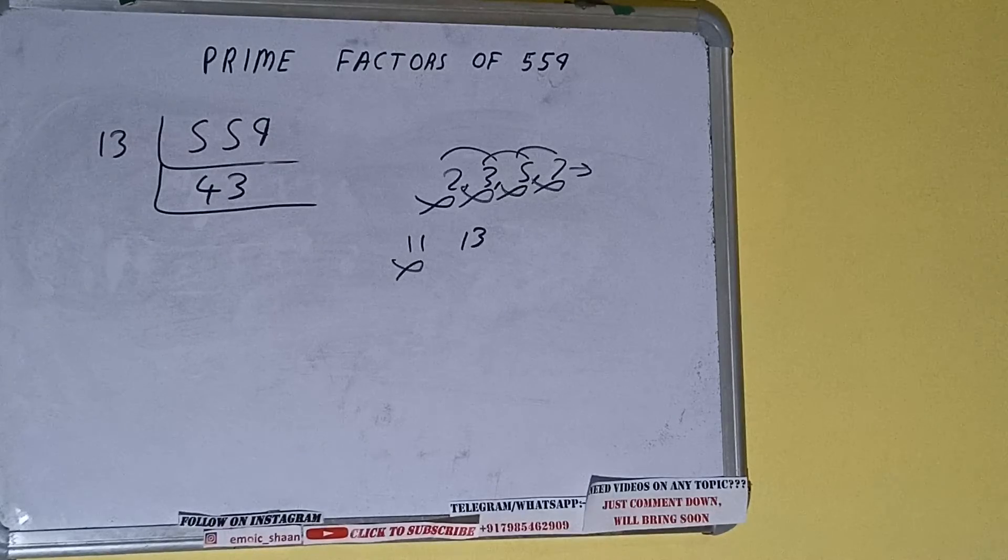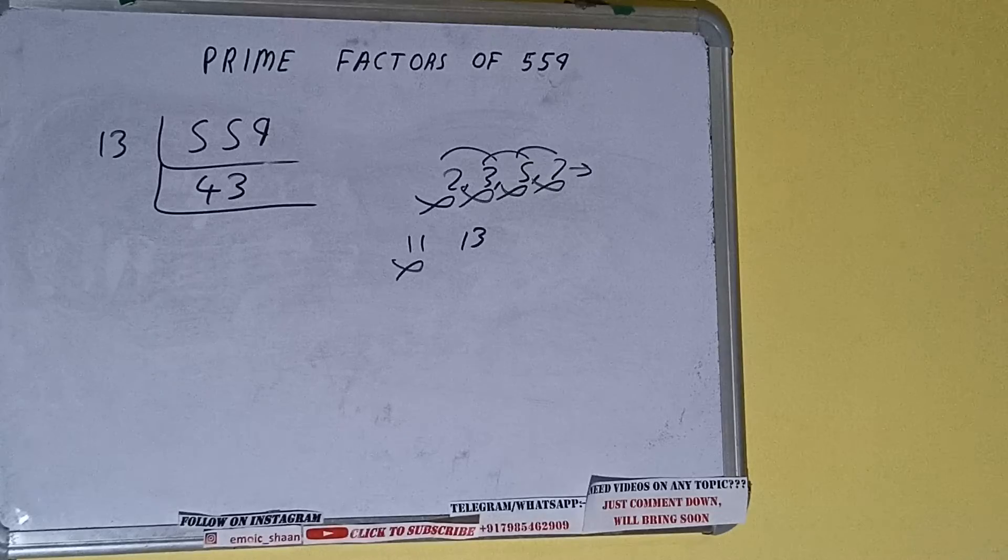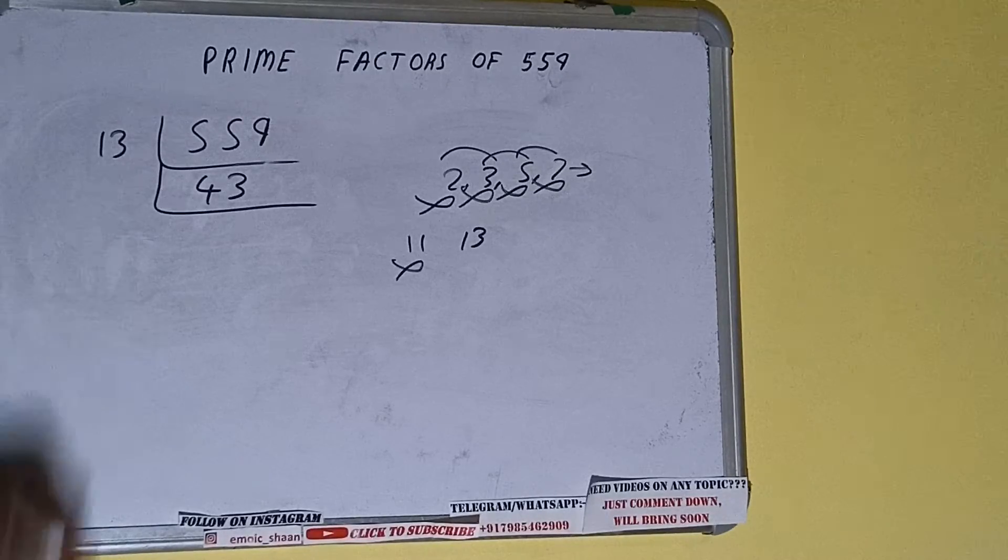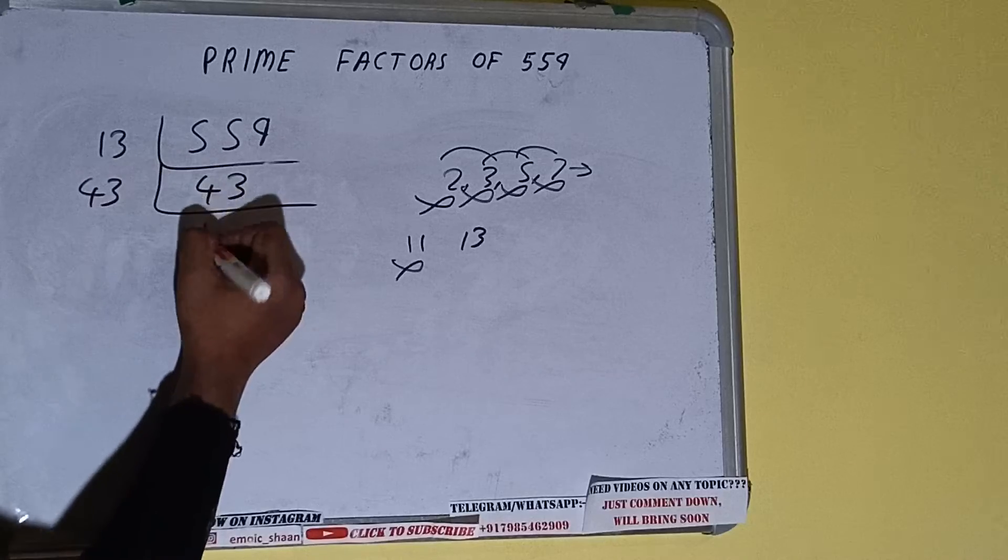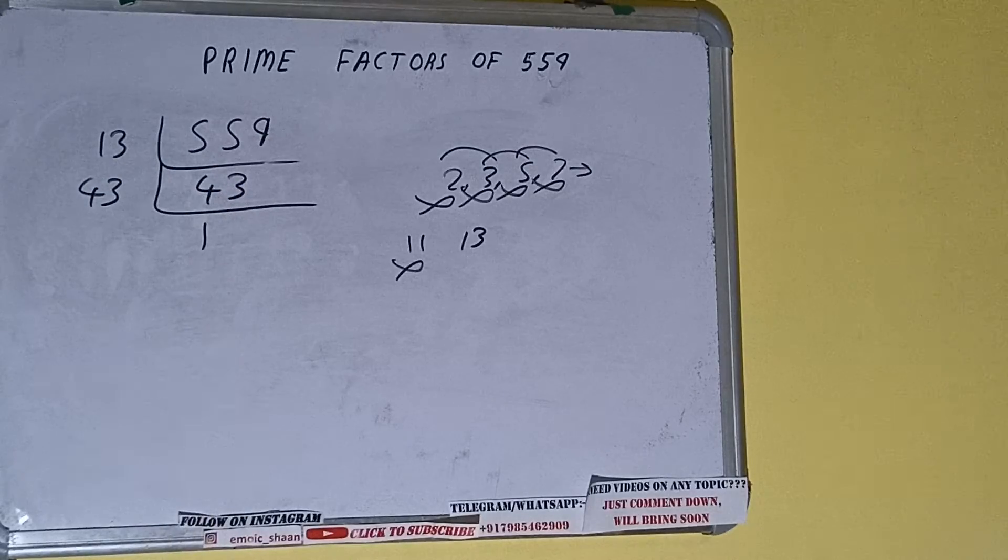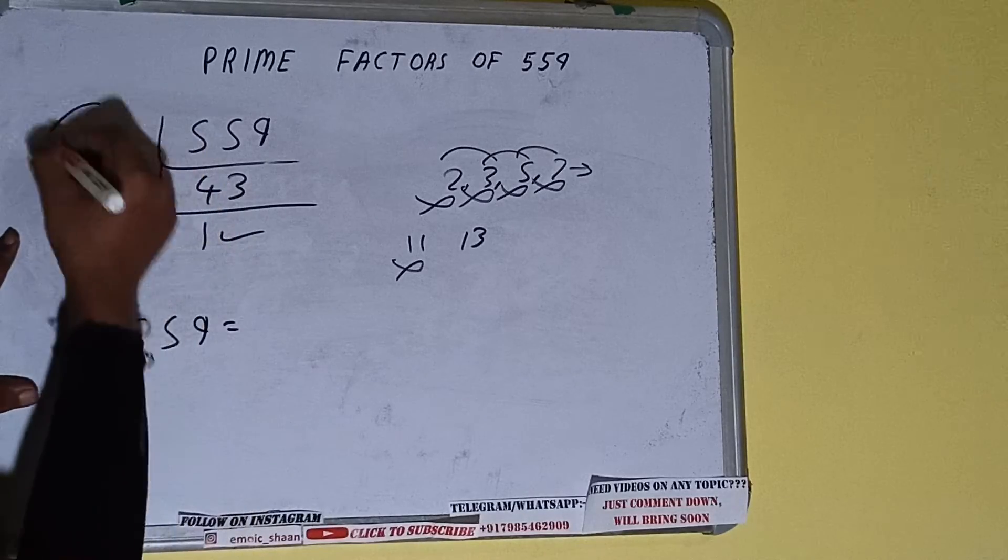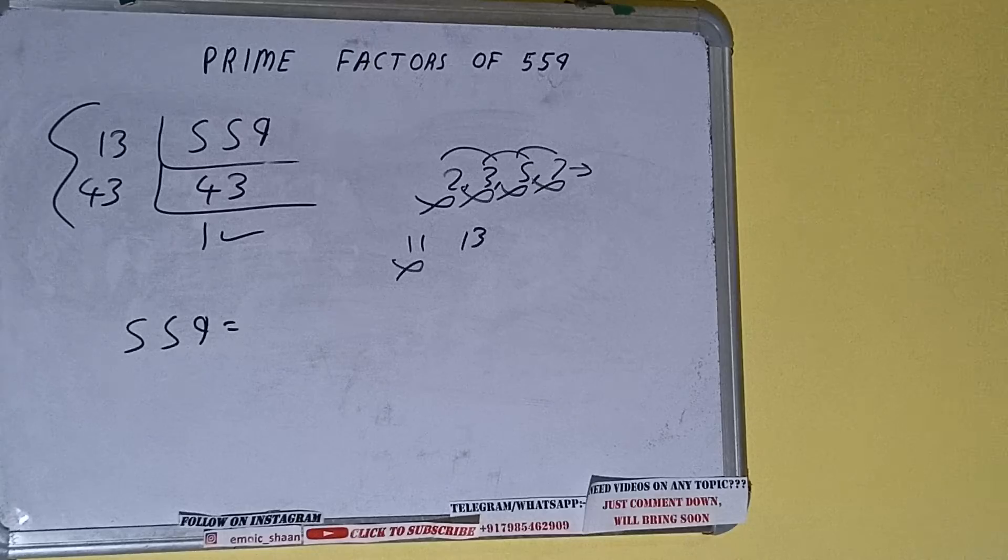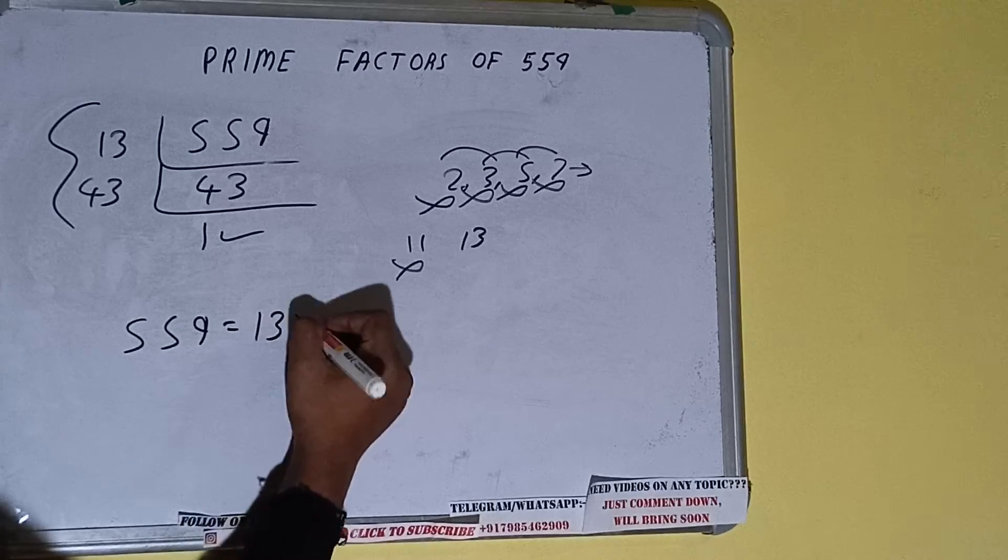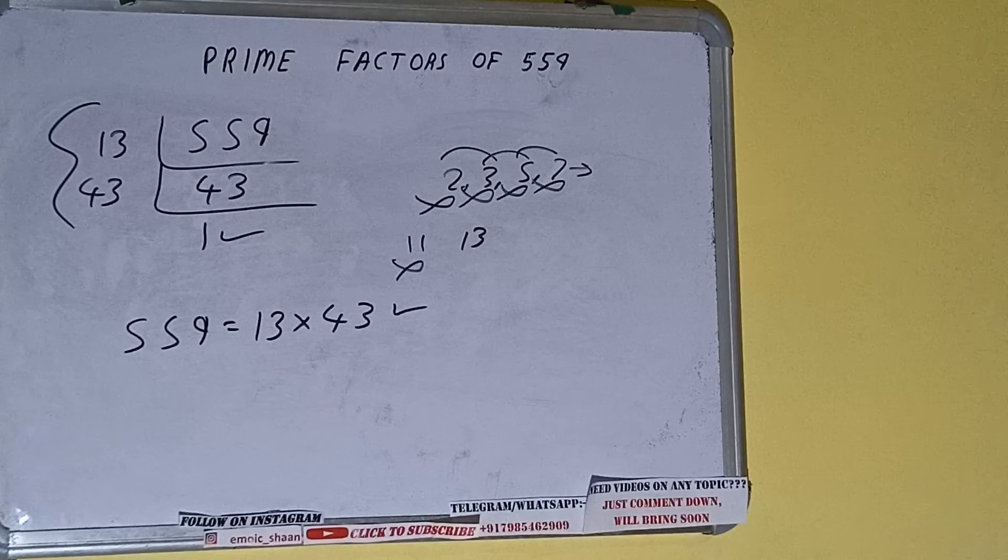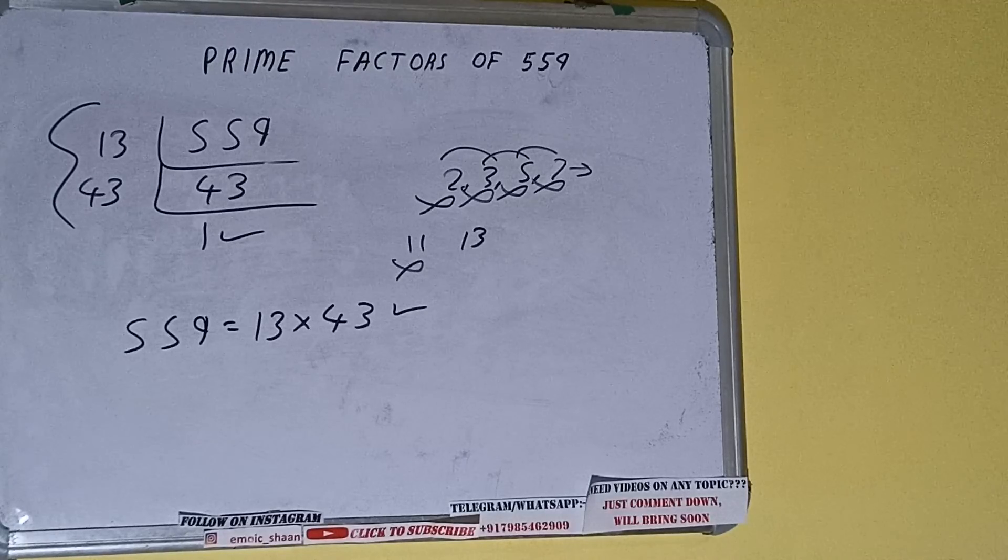We will be having 43, and 43 is not further divisible by 13. And 43 is also a prime number, so it is only divisible by itself. Once we divide by 43, we get 1. Once we get 1, we need to stop and do one last thing. The prime factors of 559 equals multiplying whatever we have on the left-hand side. That is 13 times 43. That will be the answer. So this is all about prime factors of 559.